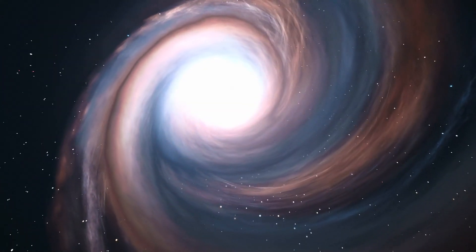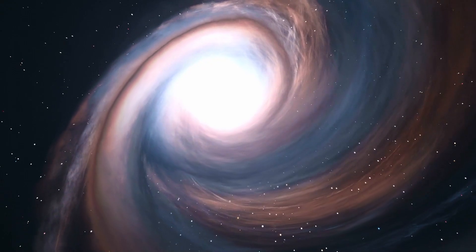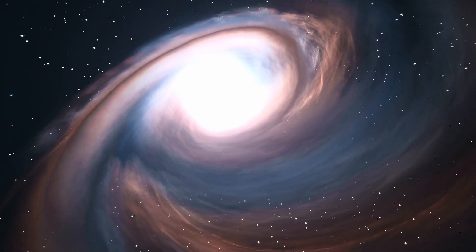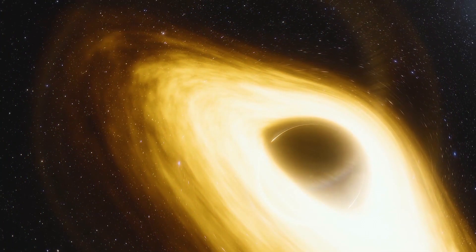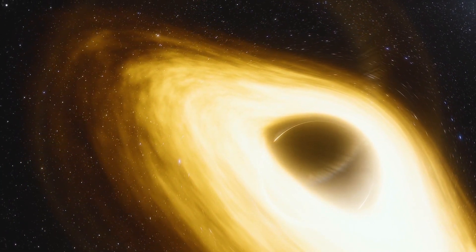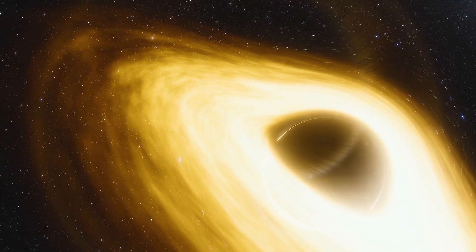Scientists believe that in the earliest universe, dark matter was compressed by its gravity into long cosmic strands and pulled ordinary matter into them as well. As a result, a web of these threads appeared in the cosmos, which intersected each other at specific intersection points.